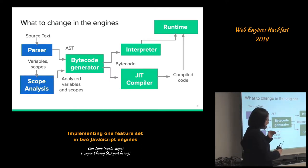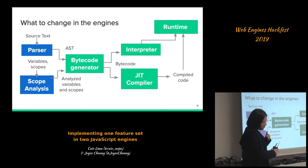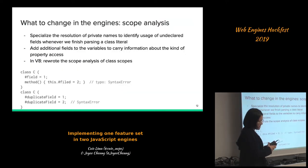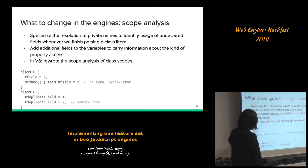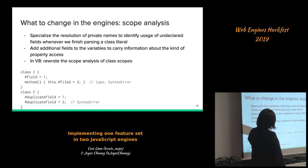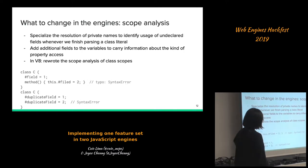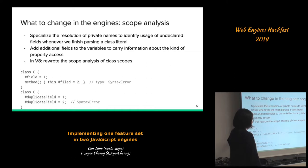Because private names can throw errors early on, we need to modify the scope analysis significantly to implement the semantics. For example, we need to specialize the resolution of private names to identify usage of undeclared fields whenever we finish parsing a class literal. For example, if a class has a '#field' but in a method we accidentally type '#filed', this throws a syntax error — whereas with an underscore prefix it would just silently add things to the instance.